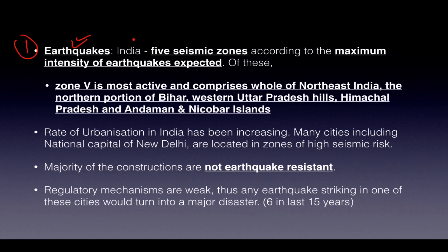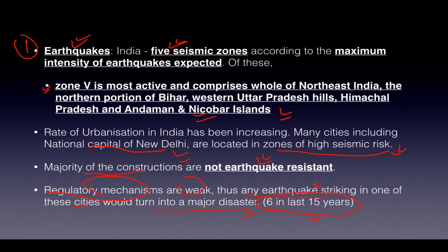For earthquakes, India is divided into five seismic zones. Zone 5 is the most vulnerable — covering the entire northeast, New Delhi, parts of Bihar, West Bengal, western UP hills, Himachal Pradesh, and the Andaman & Nicobar Islands. Urbanization is increasing in high-risk zones, most constructions are not earthquake-resistant, and regulatory mechanisms are weak — making any earthquake a potential major disaster.